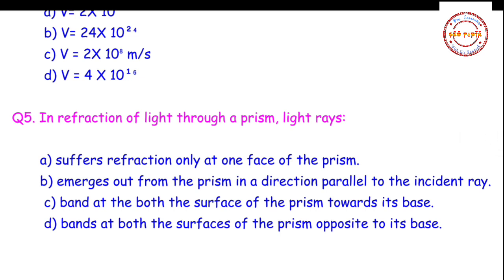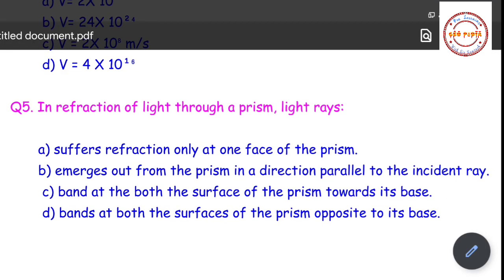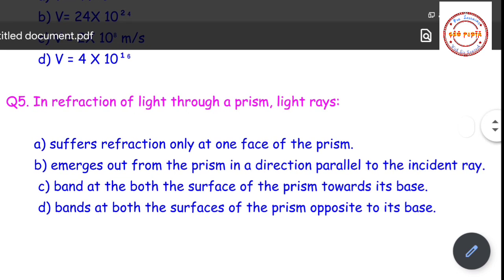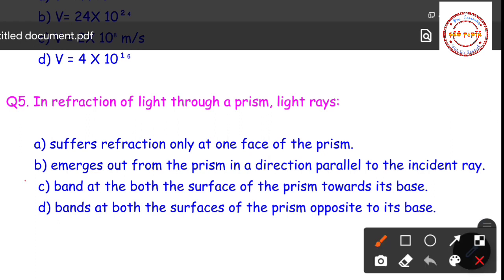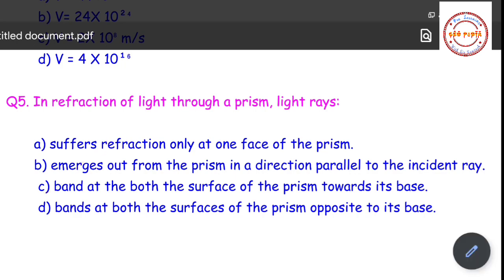Question number five: in refraction of light through a prism, light rays — (A) suffer refraction only at one face, (B) emerge parallel to the incident ray, (C) bend at both surfaces towards the base of the prism, or (D) bend at both surfaces opposite to the base. Option C is correct: light bends at both surfaces of the prism towards its base.